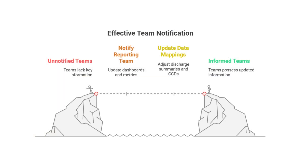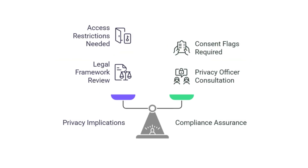The solution really comes together through strong collaboration and careful governance. You must notify your reporting team — they need to update dashboards and quality metrics to include this new BNP data. If the test needs to appear in things like discharge summaries or CCDs — that's a continuity of care document, vital for patient handoffs — you have to update those mappings too. Critically, you must check if the test has privacy implications. Tests for HIV or certain genetic markers often require specific access restrictions or special consent flags in the system, so you must work closely with your privacy officer.